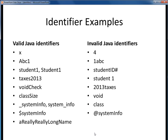Here are some examples of Java identifiers we might want to use to name our classes, variables, or methods. The ones on the left are acceptable in Java's eyes, but the ones on the right are all invalid. In the first case, the identifier '4' is invalid because it begins with a digit. The same thing is true of the second example. In this example, the number symbol at the end of 'studentID' makes this an invalid identifier. The blank space within 'student 1' makes this one invalid. '2013taxes' is an invalid name because it begins with a digit, but its counterpart on the left is just fine.